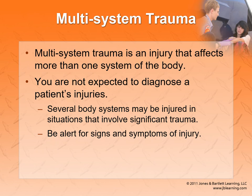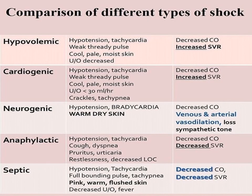Multi-system trauma means the patient has a lot of things going on — you treat as you go, stop the bleeding, plug all the holes, and throw all the dressings on there. To summarize the main shock types: hypovolemic shock has low blood pressure, fast heart rate, decreased cardiac output, and increased vascular resistance. Cardiogenic shock is similar with hypotension and fast heart rate, but it's related to the heart rather than fluid. Neurogenic shock has hypotension, slow heart rate, and warm dry skin. Anaphylactic shock has hypotension and tachycardia from an allergic reaction. Septic shock is from a massive systemic infection with the same circulatory problem.